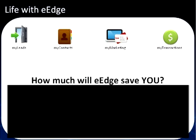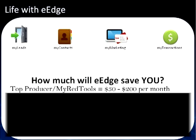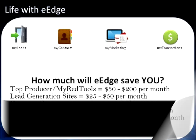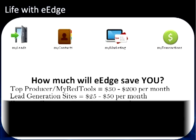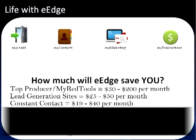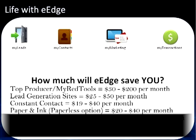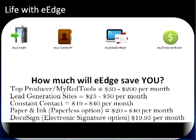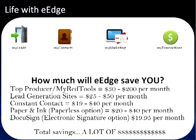One big question is: how much is eEdge going to save us, and how much is it going to cost us? Let's talk about savings first. Top Producer and My Red Tools can range anywhere between $30 and $200 per month. Lead generation sites pay for leads — between $25 and $30 per month. Constant Contact, for touching your database 33 times a year, costs between $19 and $40 per month depending on database size. Going paperless with electronic signatures can save between $20 and $40 per month. DocuSign alone is about a $20 a month savings. The total savings is significant, and the cost of eEdge to you is only $15 per month. So you can get rid of everything else and just use eEdge.